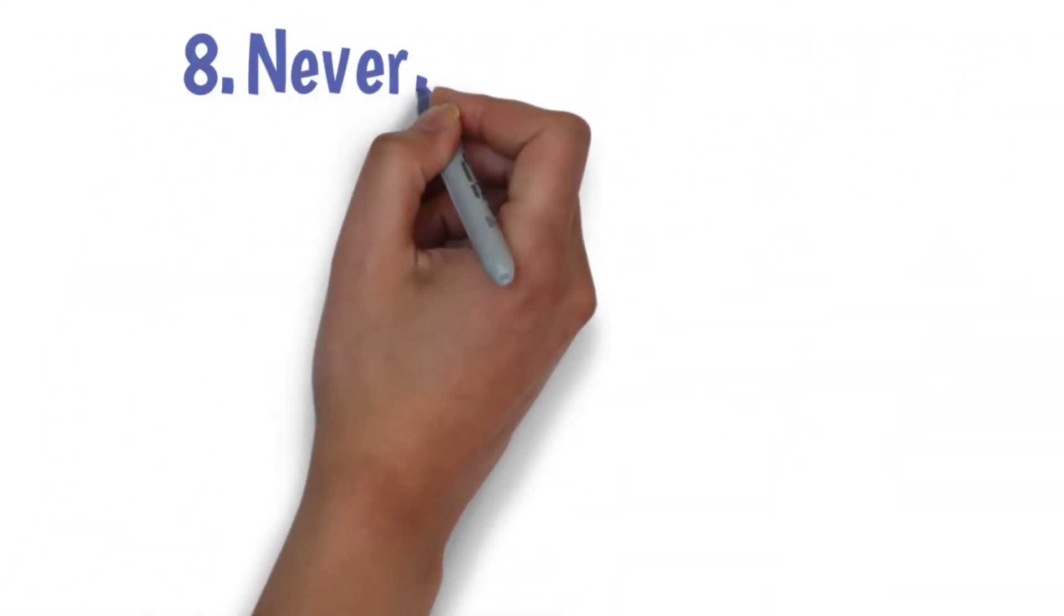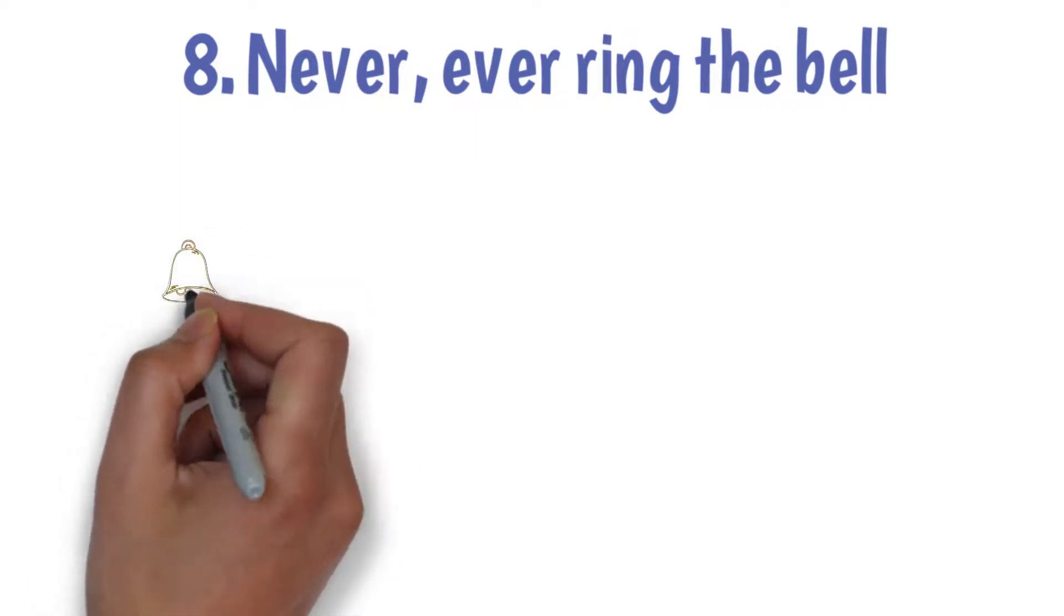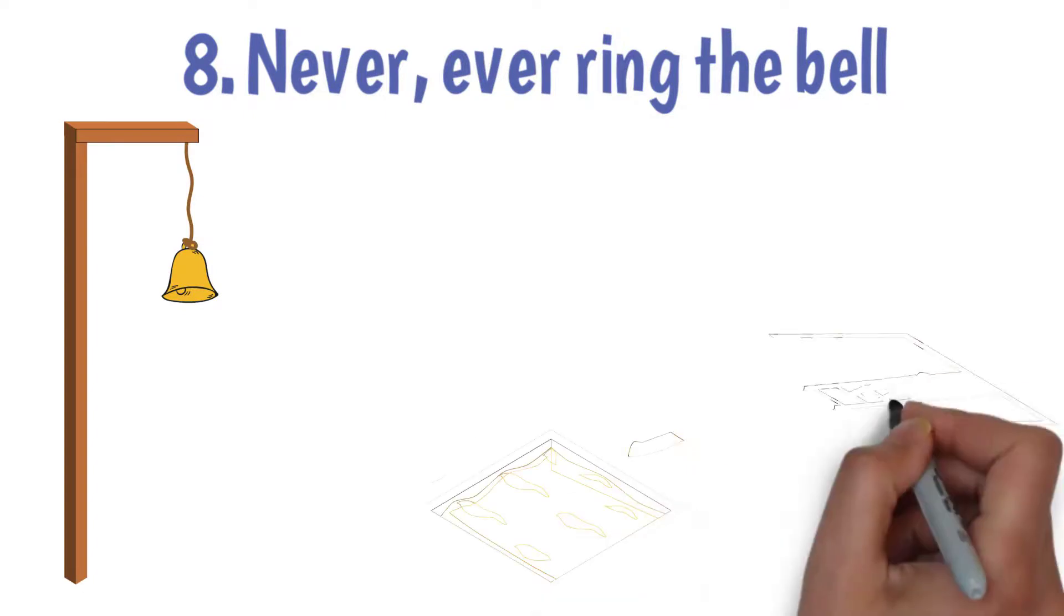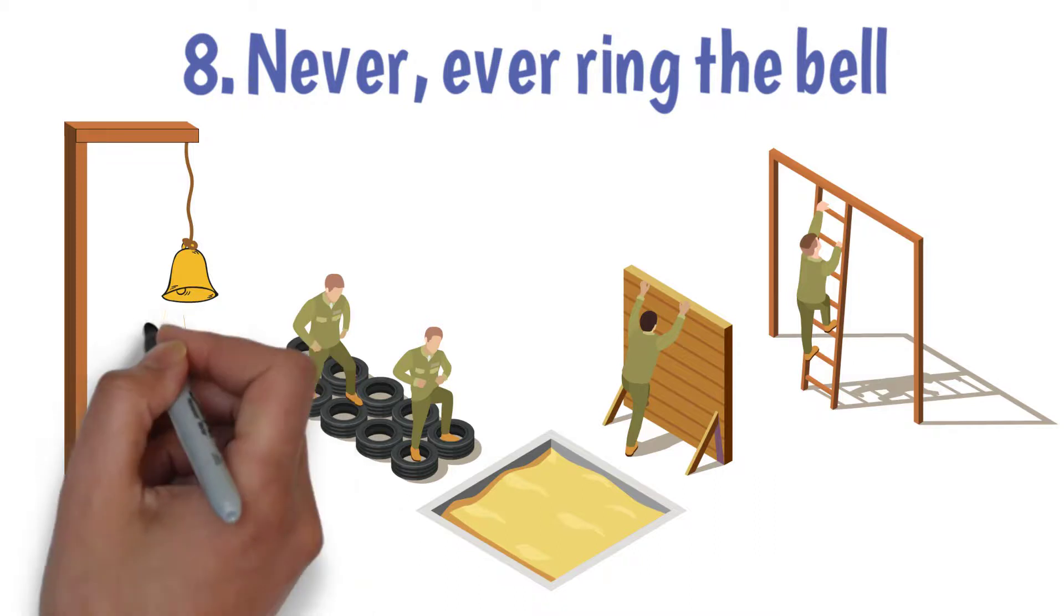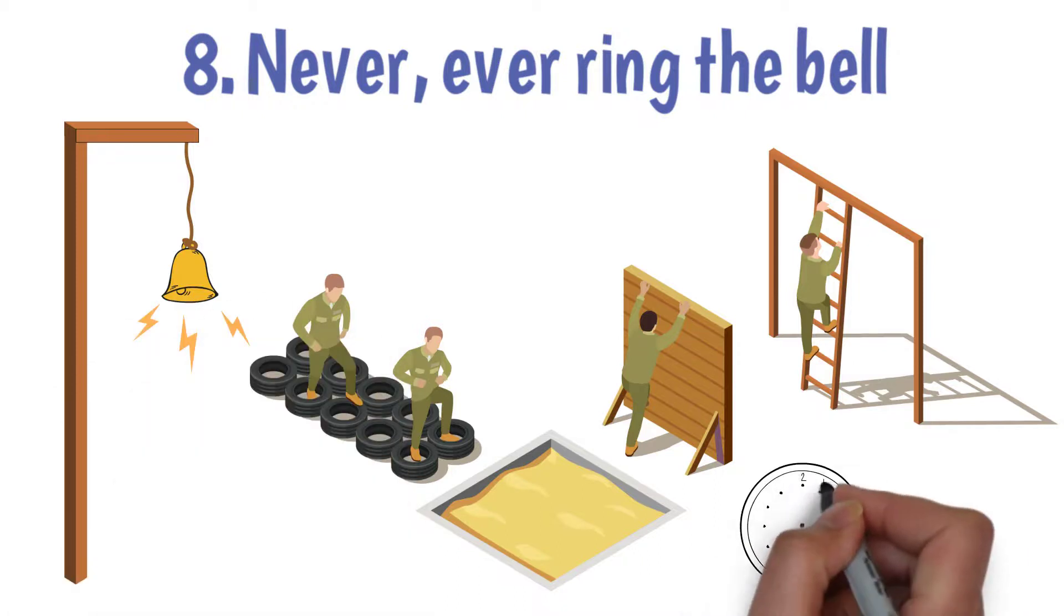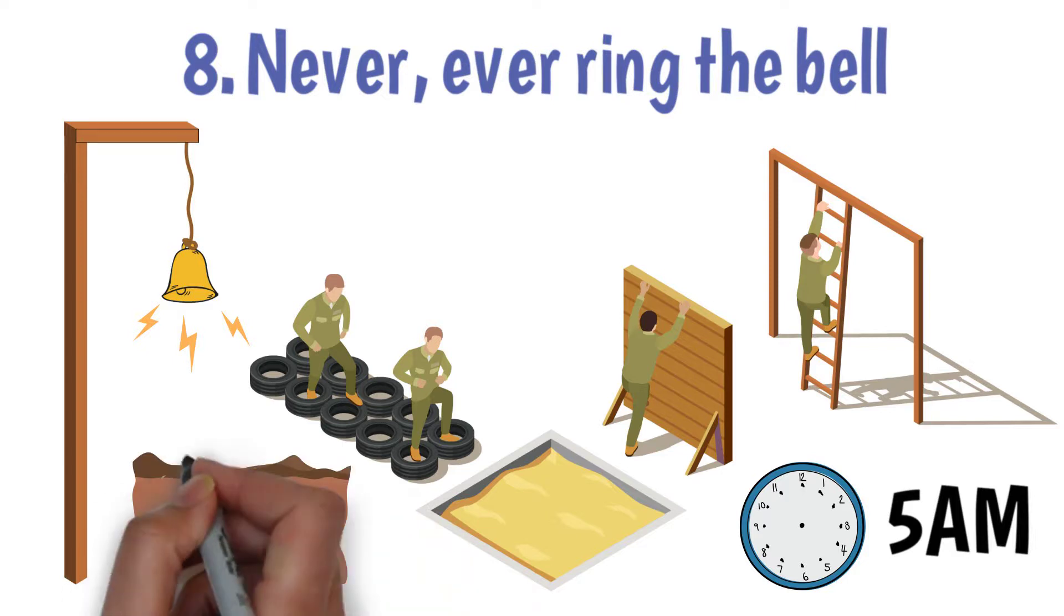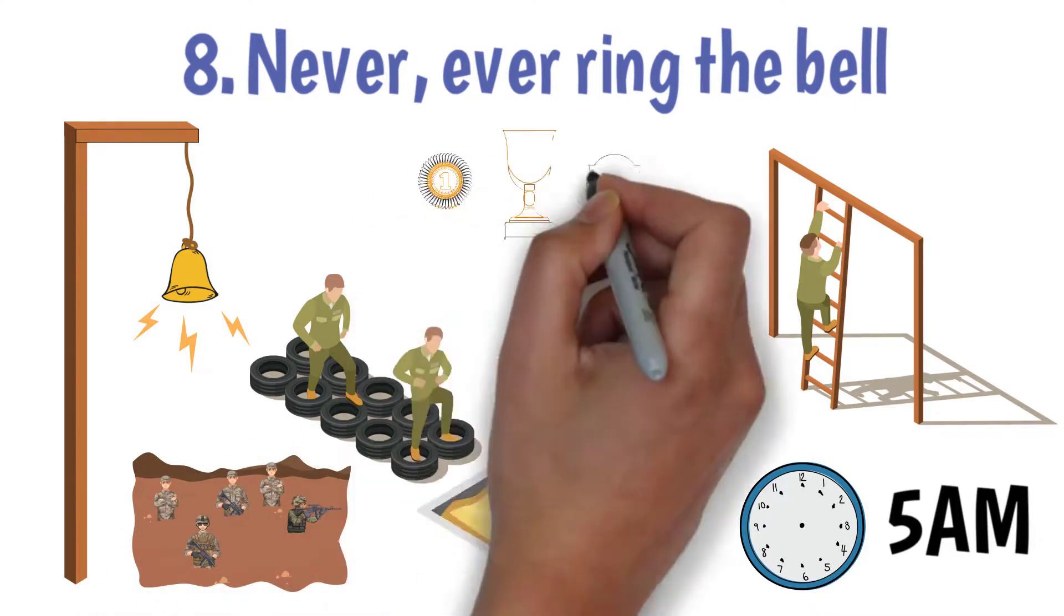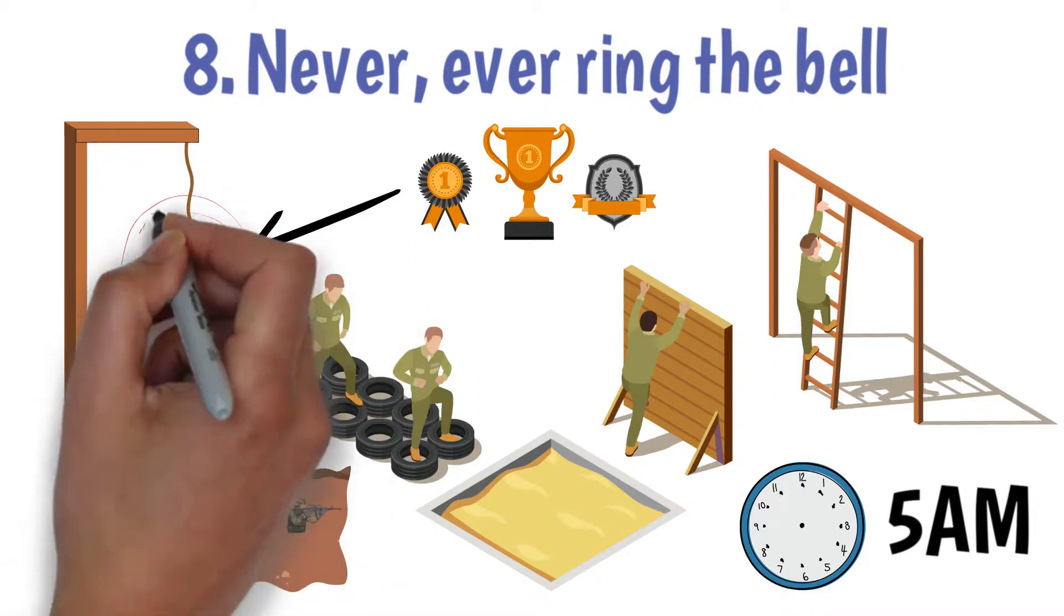Never ever ring the bell. McRaven's SEAL training teacher led the group to a brass bell hanging in the center of the courtyard on the first day. He explained that whenever the cadets would want to quit and escape the grueling training circumstances, they could just ring the bell and be free of it all. No more waking up at 5 a.m. or swimming in the freezing water anymore. No more rolling in the sand or being covered with cold mud for hours. However, if you want to achieve greatness in your life, you must never ring the bell. By giving up, you'll rob yourself from the great things that come after hard work and determination. So keep your head up high and don't ever ring that bell.